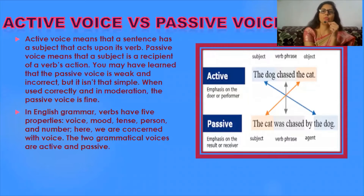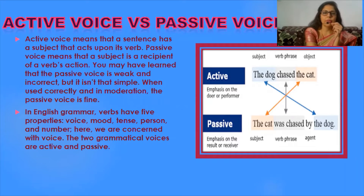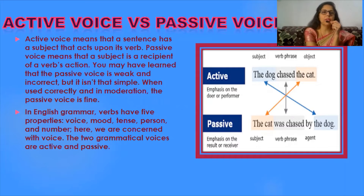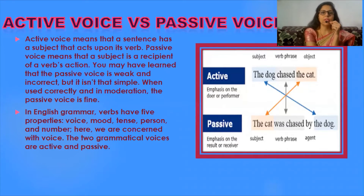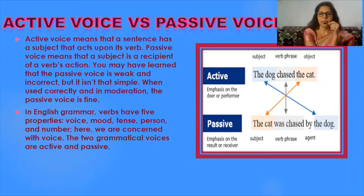Active voice versus passive voice. Active voice means that a sentence has a subject that acts upon its verb. On the other hand, passive voice means that a subject is a recipient of a verb's action. You may have learned that passive voice is weak and incorrect, but it isn't that simple. When used correctly and in moderation, the passive voice is fine — it is a variant way of expressing your ideas in language.